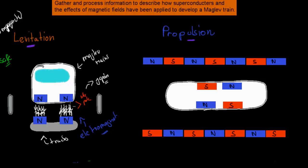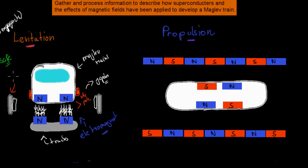You should also know there are magnets on the sides as well. So you're going to see side magnets both on the tracks and on the train. The magnets on the bottom of the tracks help with levitation, whereas the ones on the side will help with propulsion.